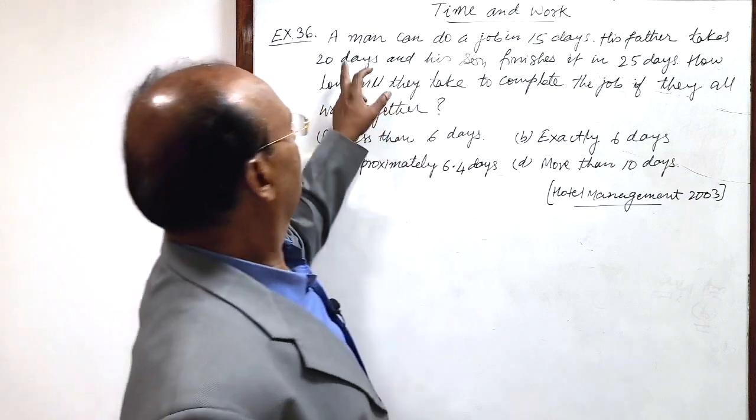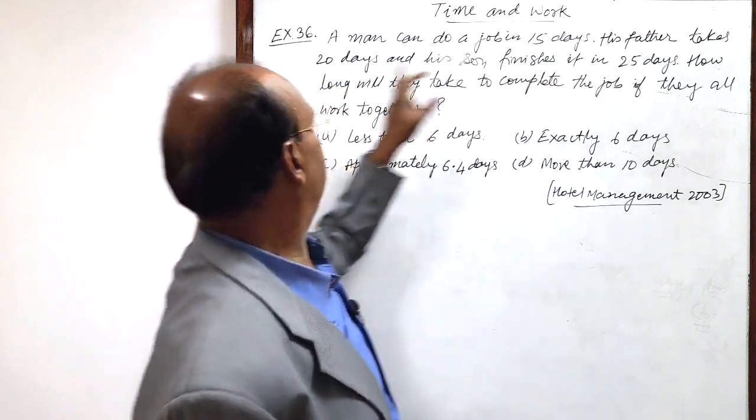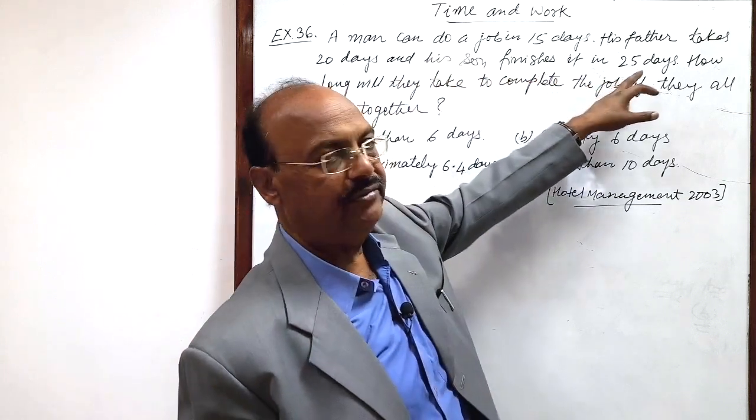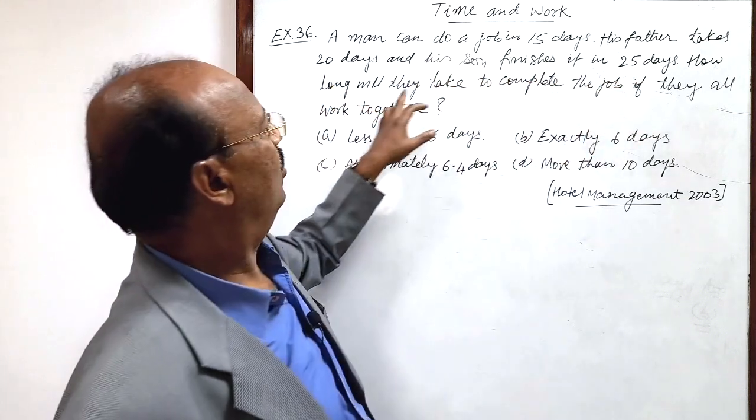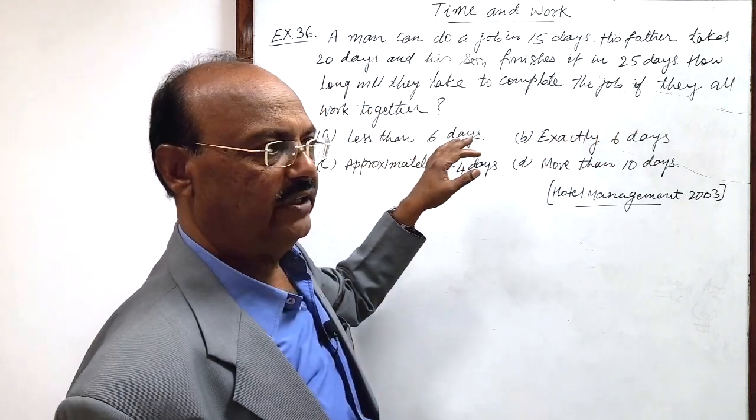Question is, a man can do a job in 15 days, his father takes 20 days and his son finishes it in 25 days. How long will they take to complete the job if they all work together?